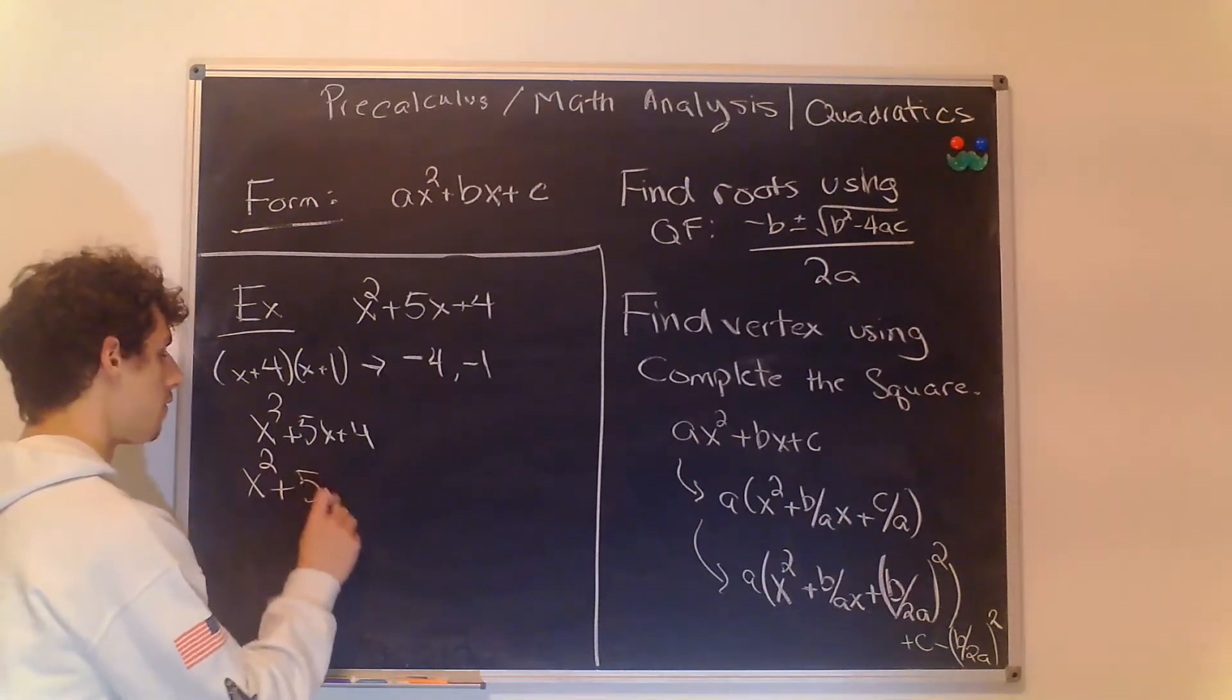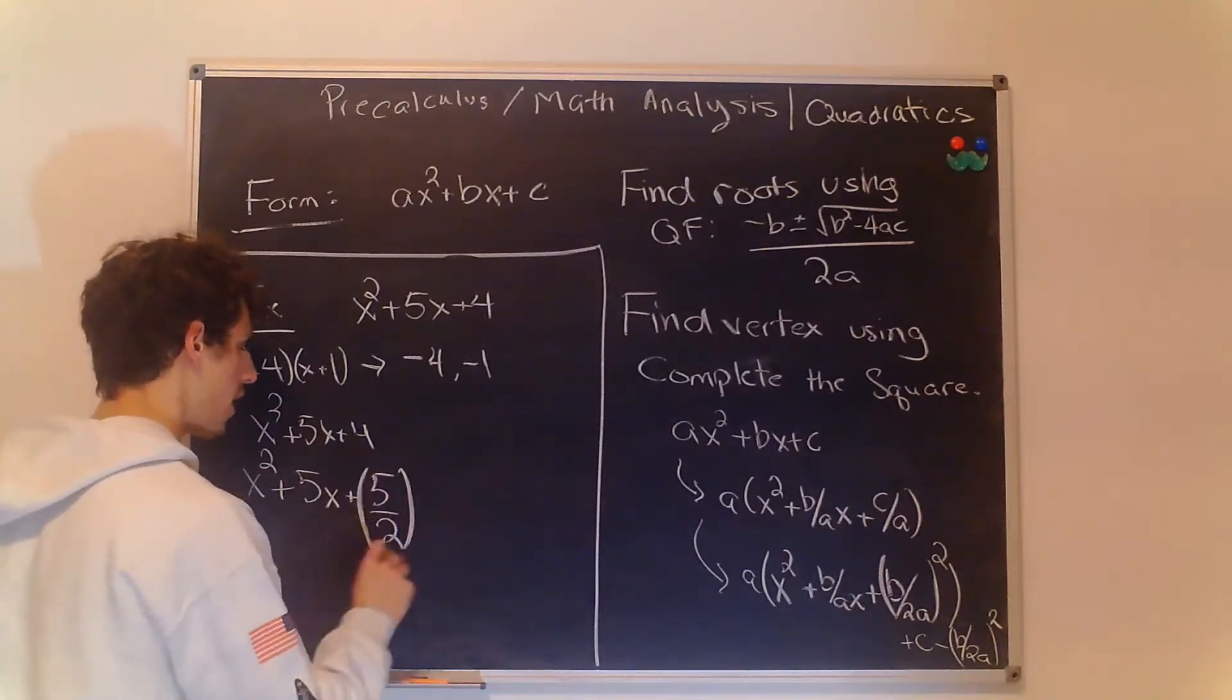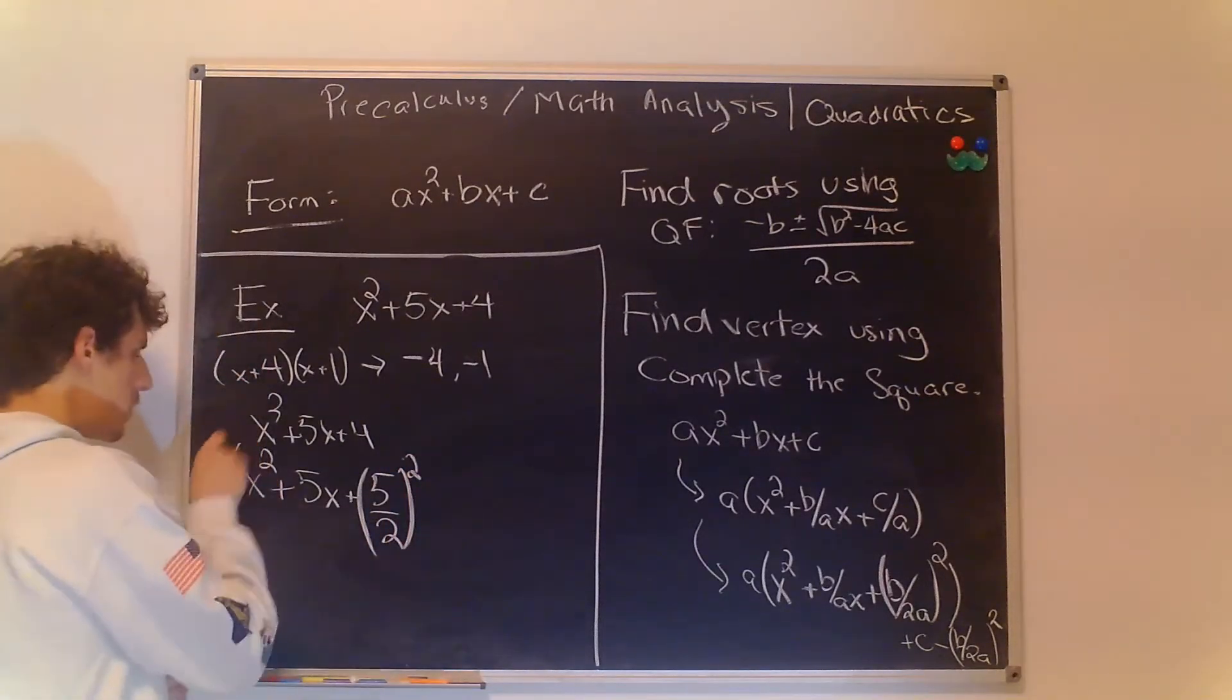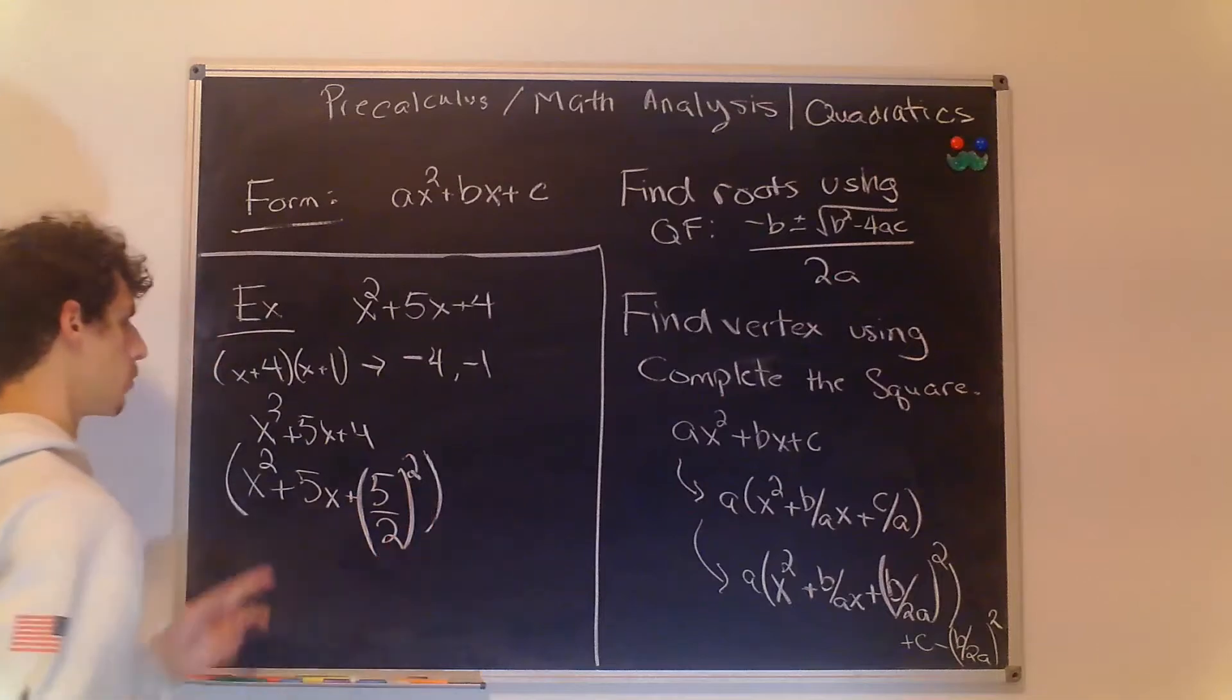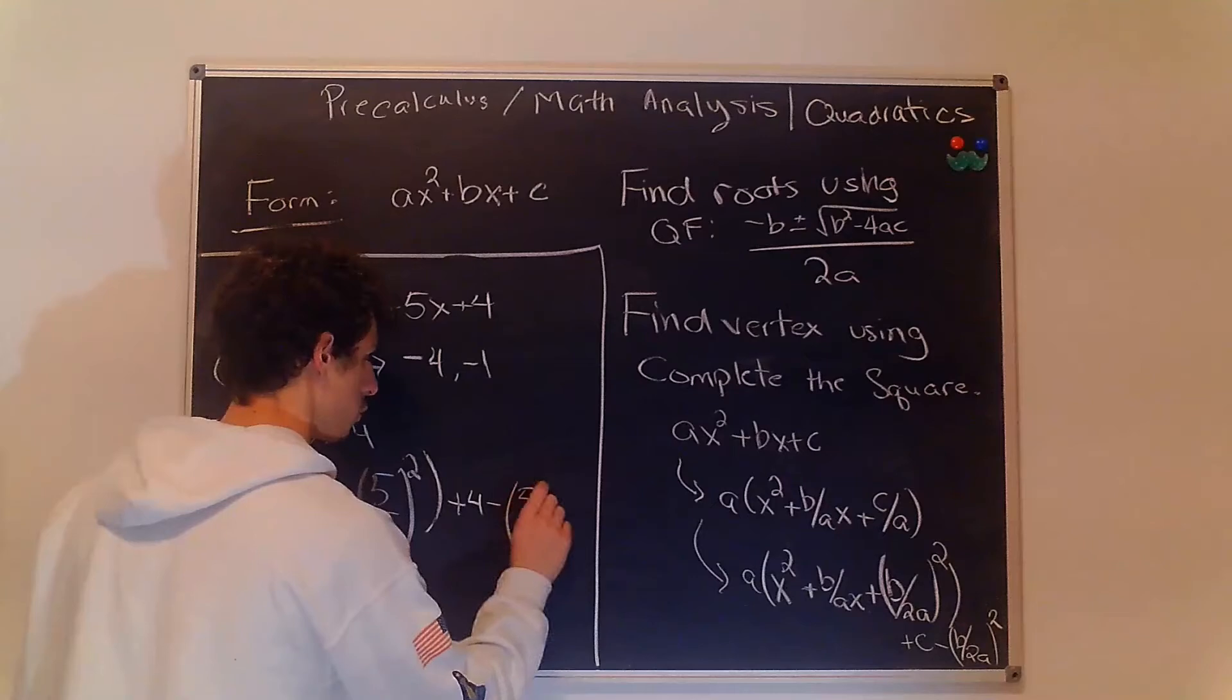So we have x² + 5x + (5/2)² and we're going to put this all in parentheses because this is going to be grouped together and outside we're going to have +4 and then -(5/2)².